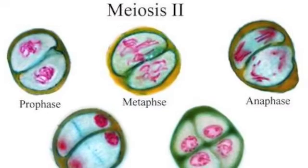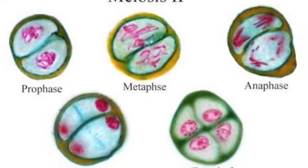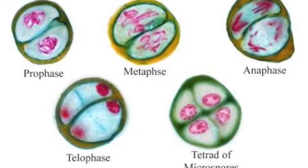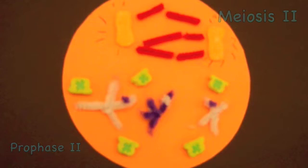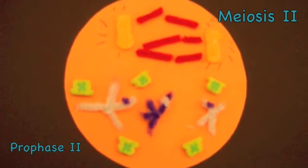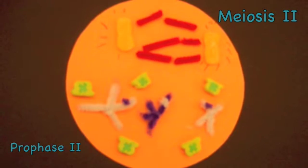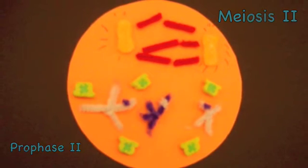The cell then moves into meiosis II where sister chromatids are split. At this point, interphase does not occur again because each haploid cell already contains its genetic information to make two daughter cells. Prophase II is when centrosomes form and move toward opposite ends of the cell.